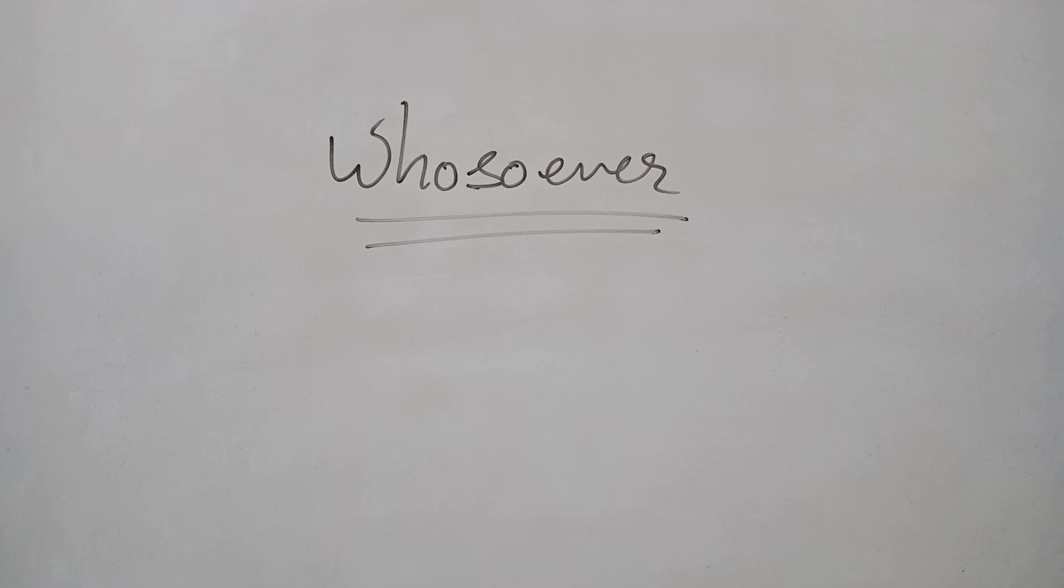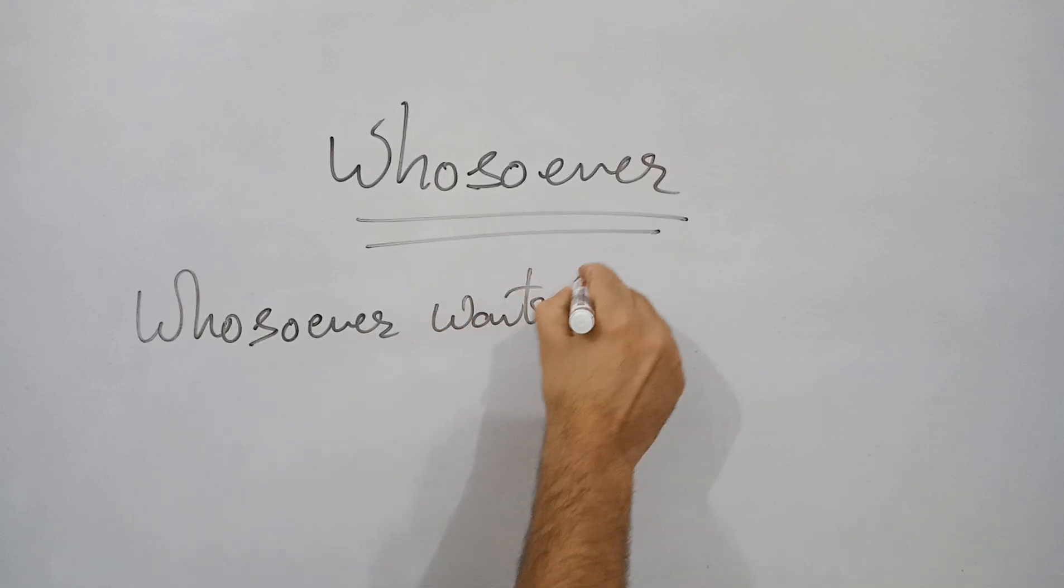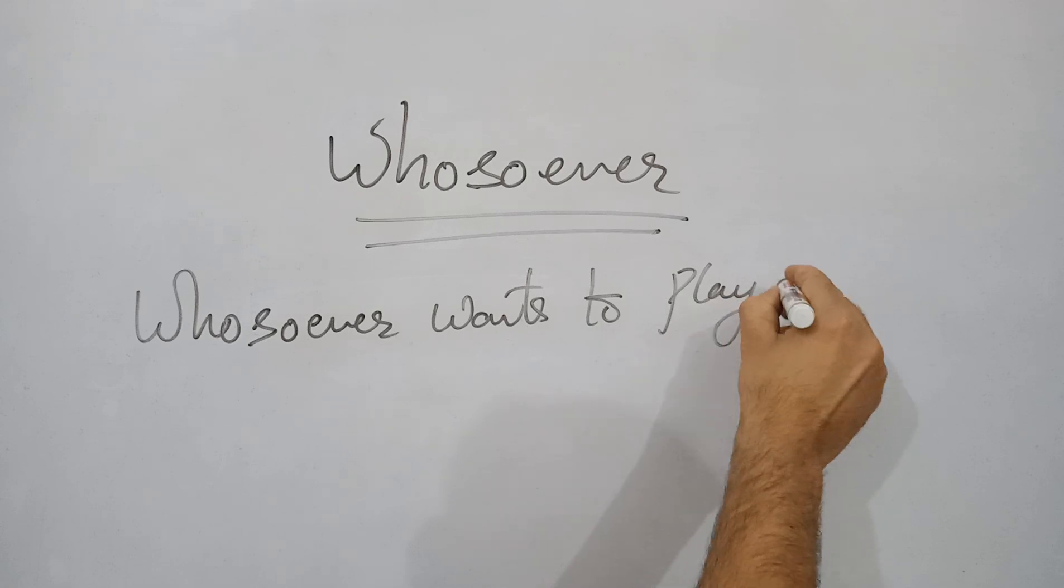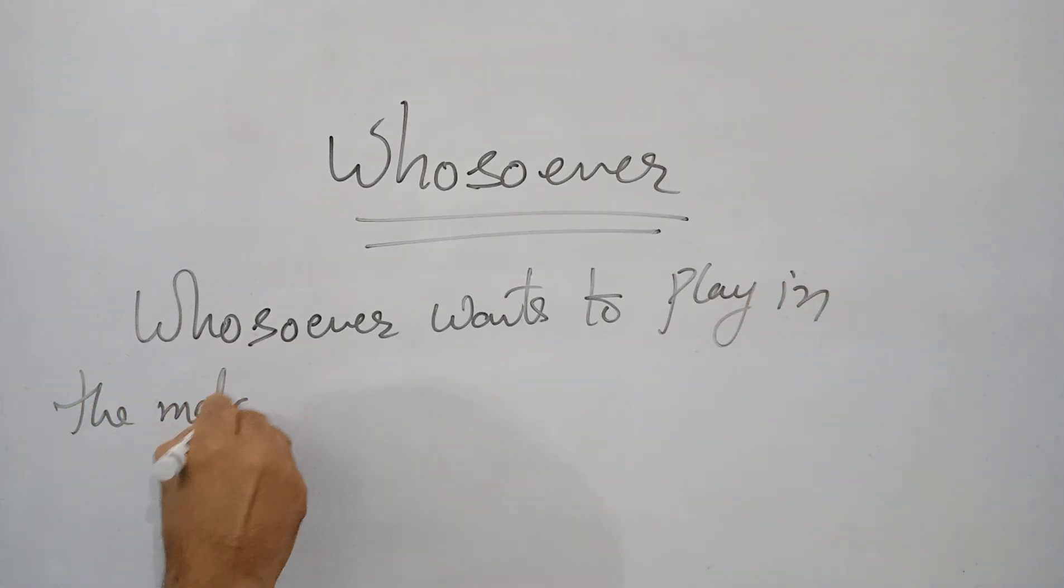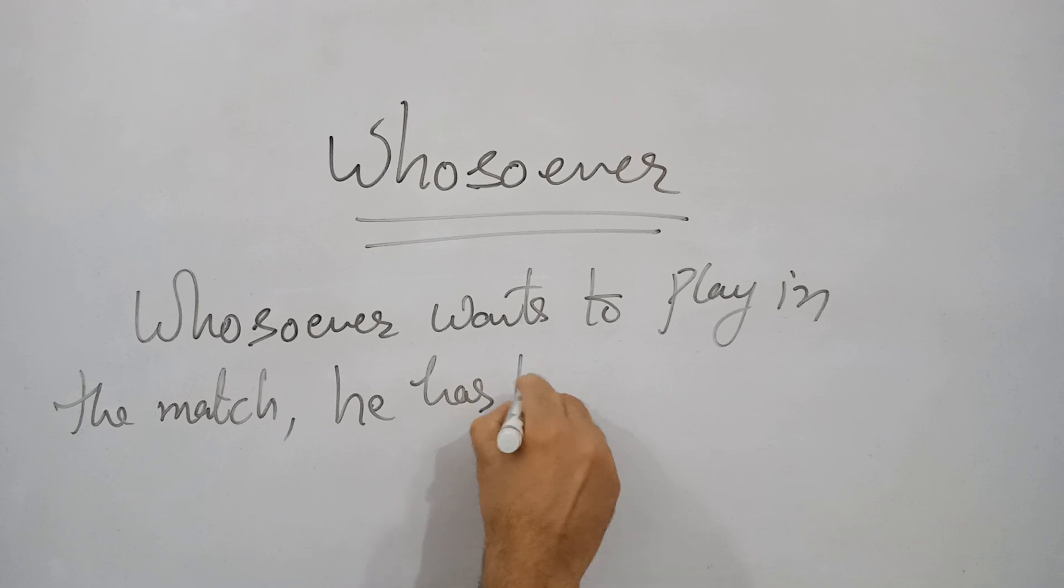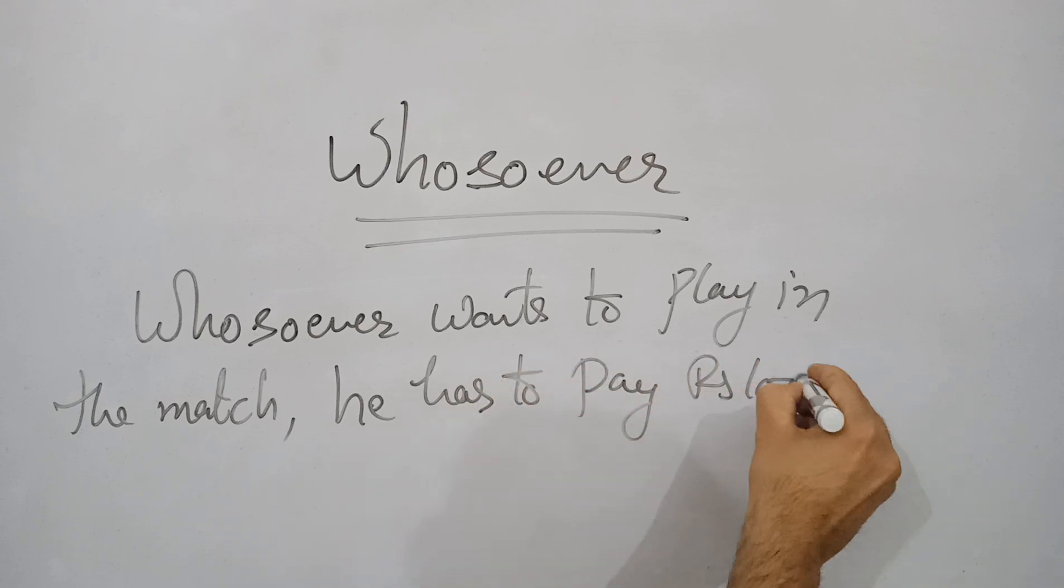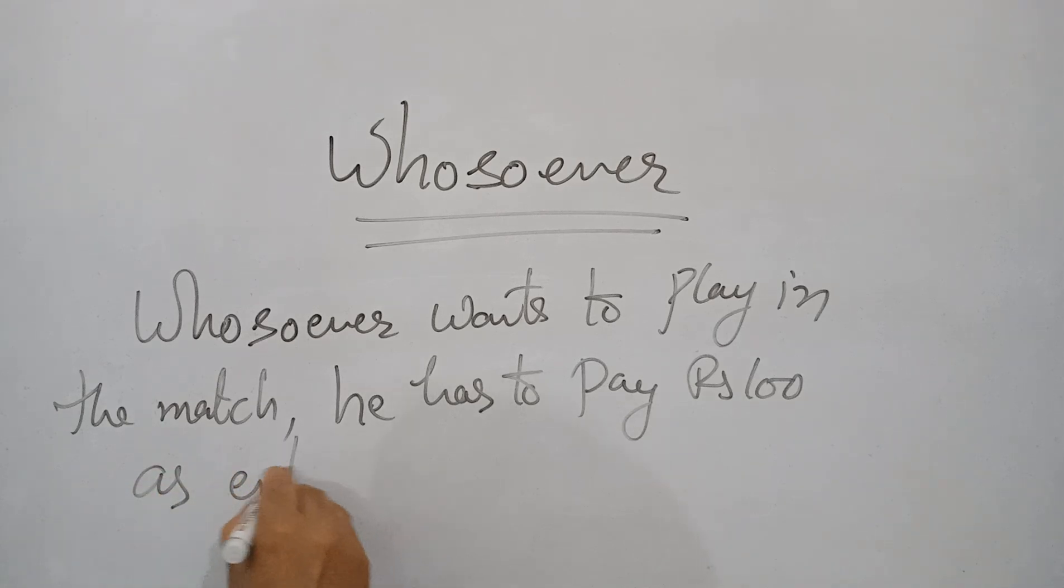Whosoever means 'jo bhi, jo koi bhi'. For example, whosoever wants to play in the match, in the cricket match, he has to pay rupees hundred as entry fees. So this is how sentences are formed with whosoever.